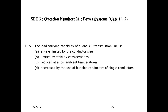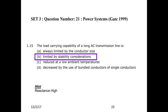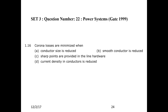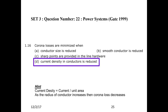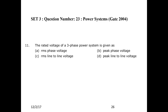Next question: The load carrying capacity of a long AC transmission line is limited by the stability condition. Next question: Corona losses are minimized when — the answer is when current density in the conductor is reduced. Current density is current per unit area; as the radius of the conductor increases, corona loss decreases. Next question: The rated voltage of a three-phase power system — if nothing specific is mentioned, it means line-to-line RMS voltage. Choice C is correct.